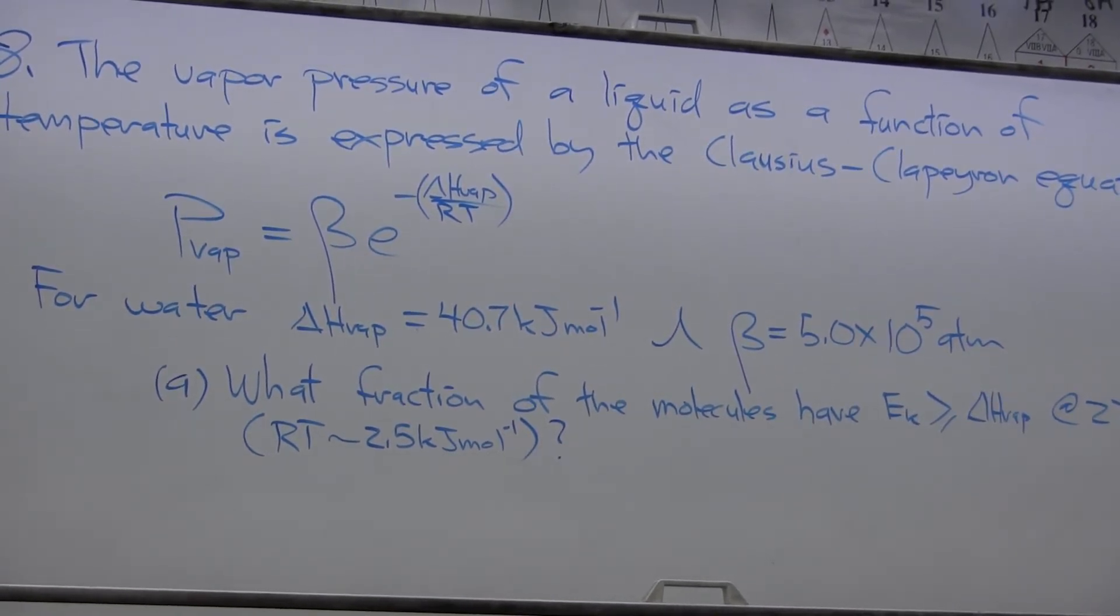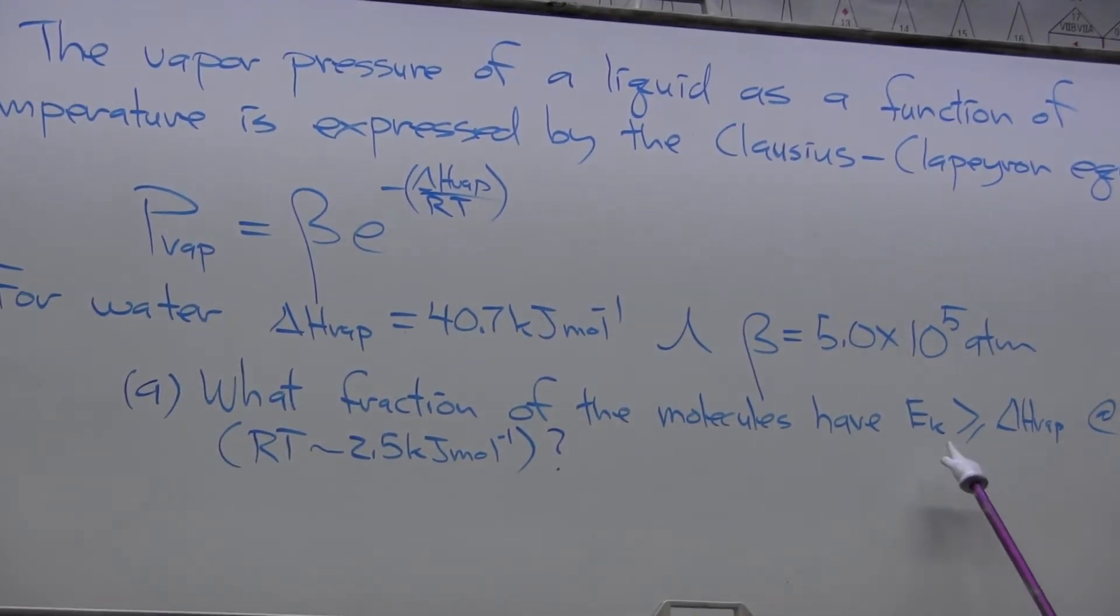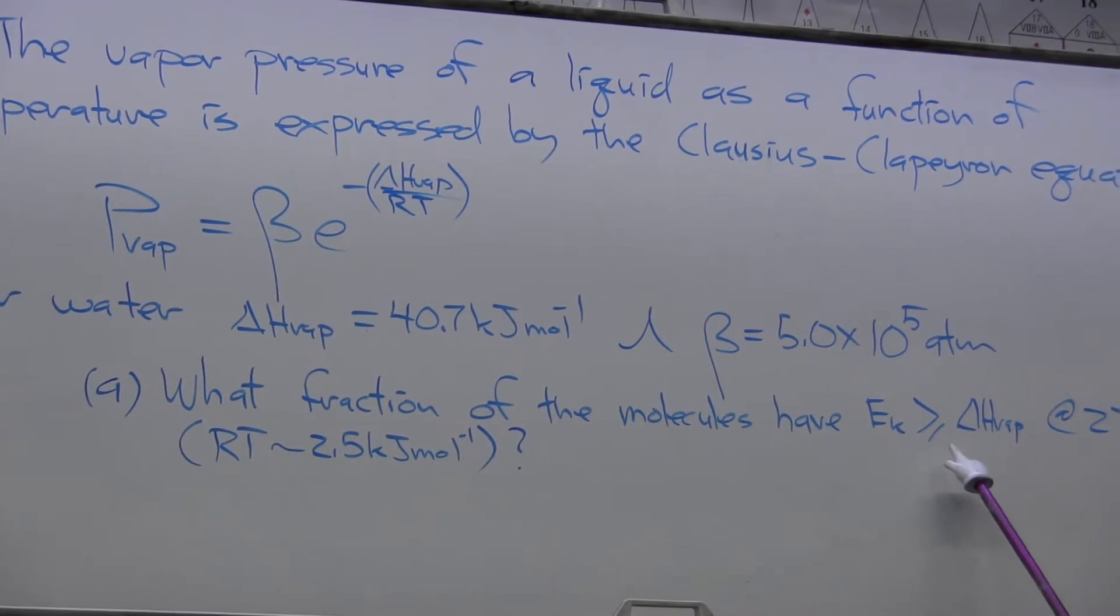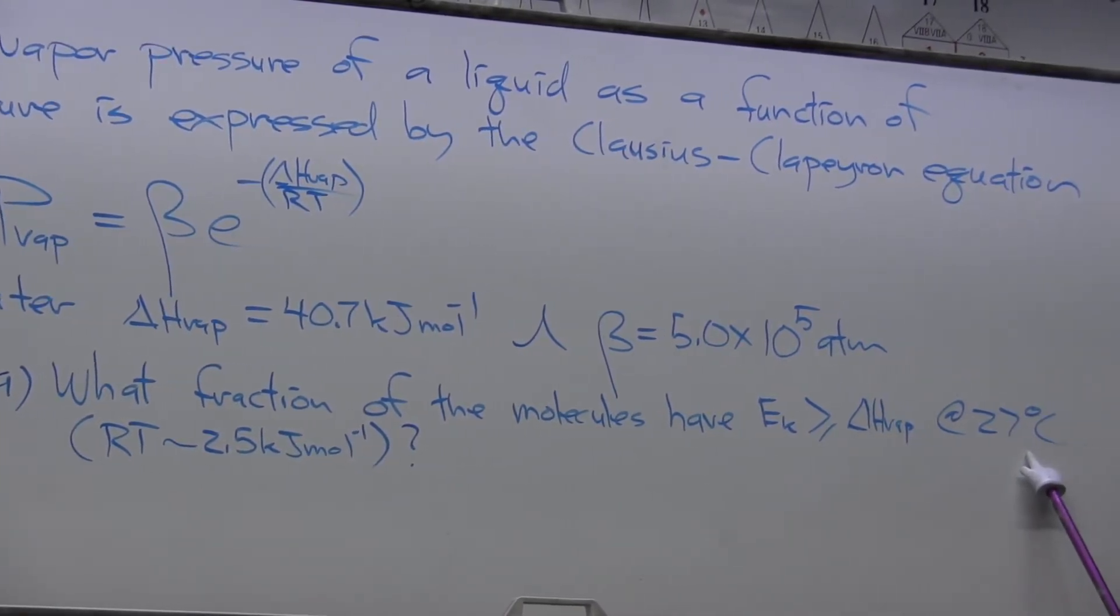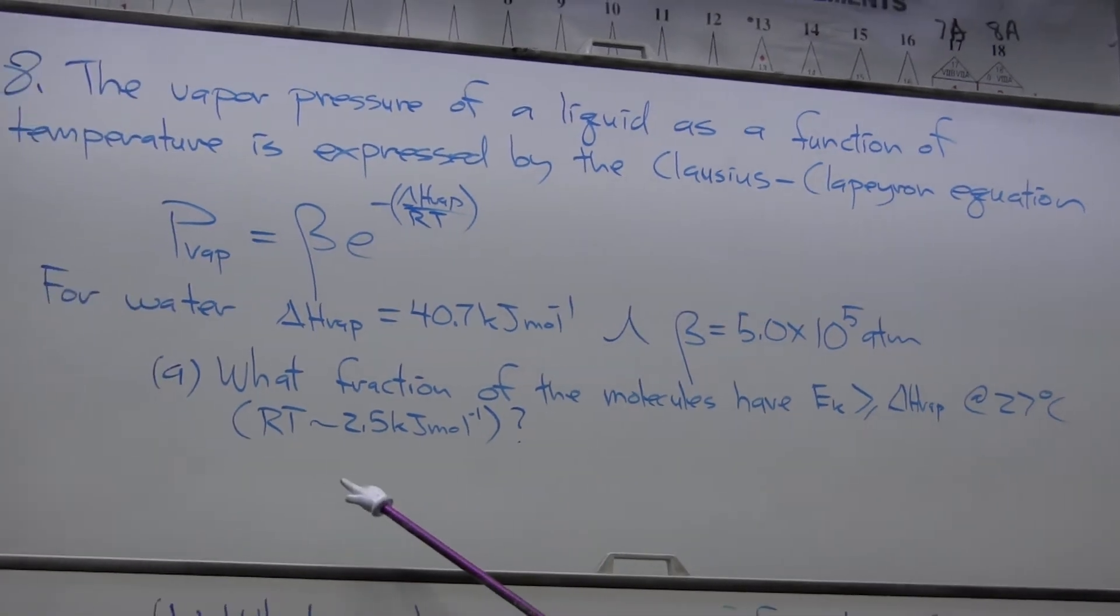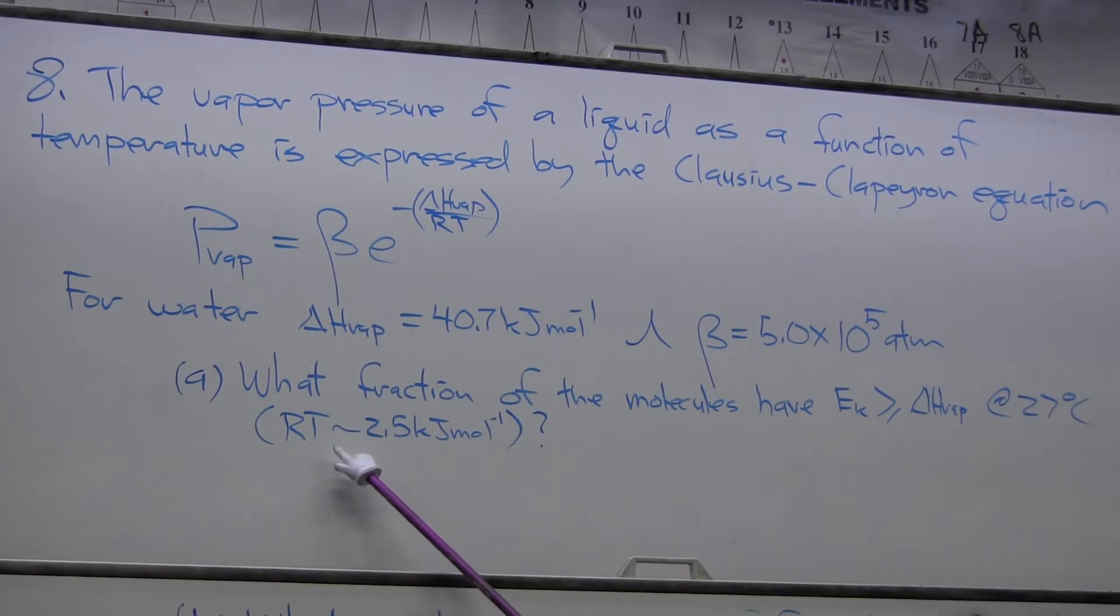I ask you two questions. What fraction of the molecules have kinetic energy greater than or equal to delta H vaporization at 27 degrees Celsius? I'll give you the approximation that RT is about equal to 2.5 kilojoules per mole at 27 degrees Celsius.